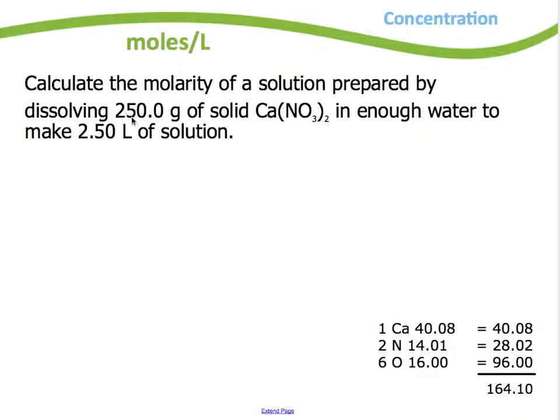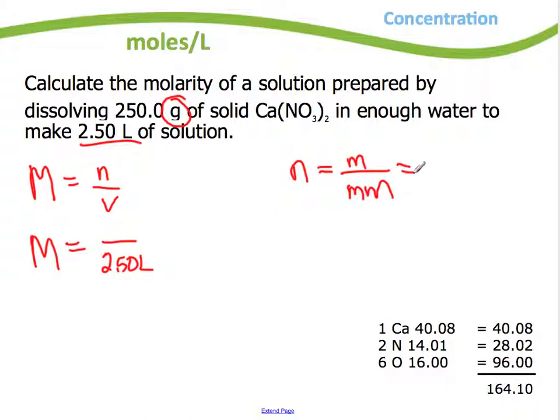Calculate the molarity of a solution prepared by dissolving 250 grams of solid calcium nitrate and enough water to make 2.5 liters of solution. So again they want molarity. My formula molarity is equal to moles over volume. In this case, I don't know what my moles are. I do know what my volume is though, 2.50 liters. But I need to determine moles. So I know to determine moles of any solution or of any substance, especially if I'm given grams, all I have to do is divide the mass by the molar mass of that particular substance.